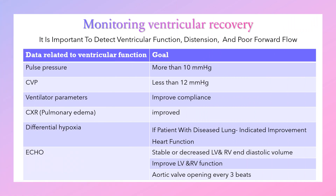Why do we need to monitor ventricular function? To detect ventricular function, detect its distension, and pull forward the flow. Data reflecting ventricular function include pulse pressure more than 10 mmHg, central venous pressure less than 12 mmHg, improving ventilatory compliance, improving pulmonary edema on chest x-ray, differential hypoxemia — meaning the lung is still diseased but the heart has improved — and echo showing stable or decreased left and right ventricular end-diastolic volume, improving function, and aortic valve opening every three beats.